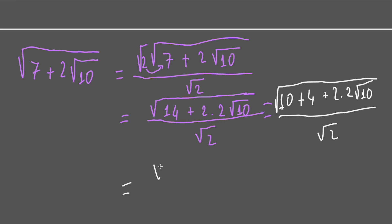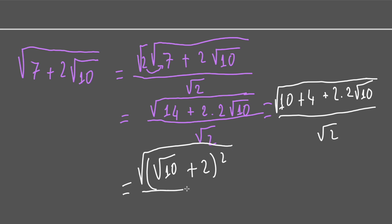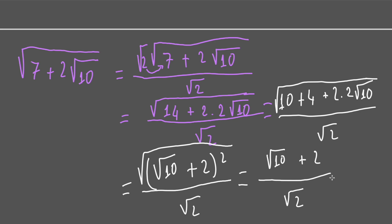Finally we have square root of (√10 + 2) squared under the radical, over square root of 2. That gives square root of 10 plus 2 over square root of 2, which simplifies to square root of 5 plus square root of 2.